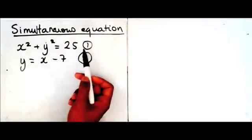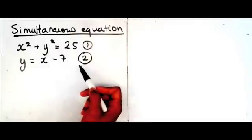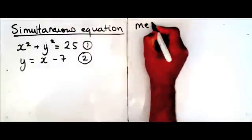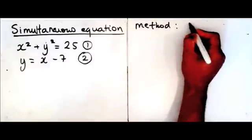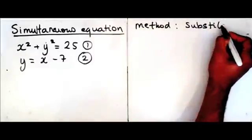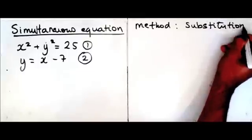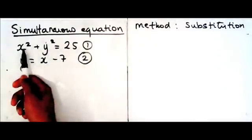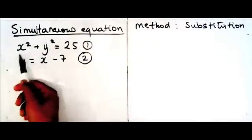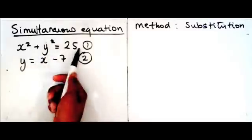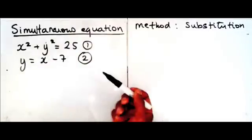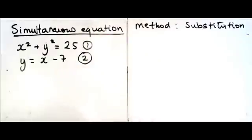When you have a quadratic equation and a linear equation, the method that you should use is called substitution. This is a quadratic because both variables have the power of 2, and the other one is linear because both variables have a power of 1. You're going to use this method when you have a quadratic and a linear equation.